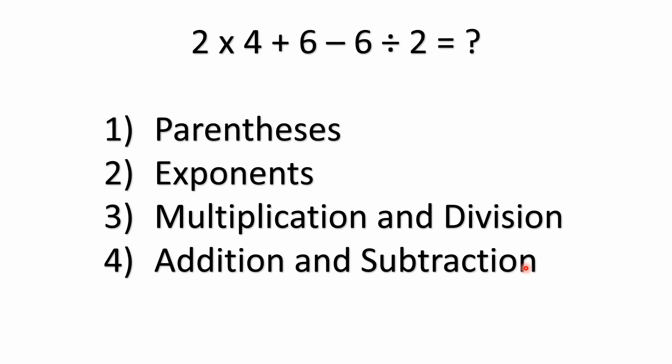You look for parentheses first, which are just grouping symbols. Then next would be anything like exponents, square roots, things like that. The third step would be multiplication and division, which we would solve left to right — multiplication and division have equal precedence. And we do have multiplication and division here, as well as addition and subtraction, which would be your fourth step.